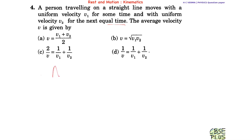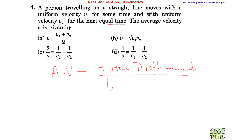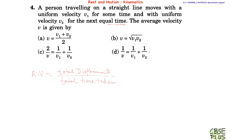Whenever we have to find the average velocity, first we find the total displacement and then divide this total displacement by total time taken. This is the formula for average velocity, so all we have to find is the total displacement.